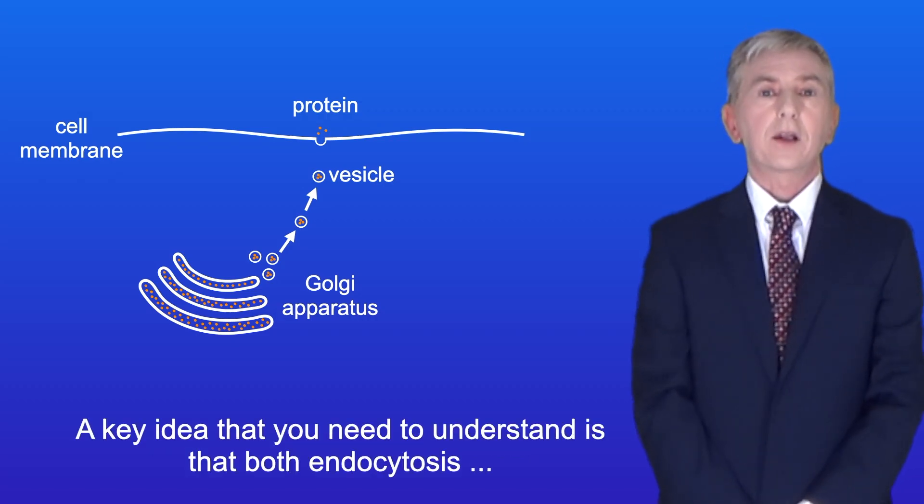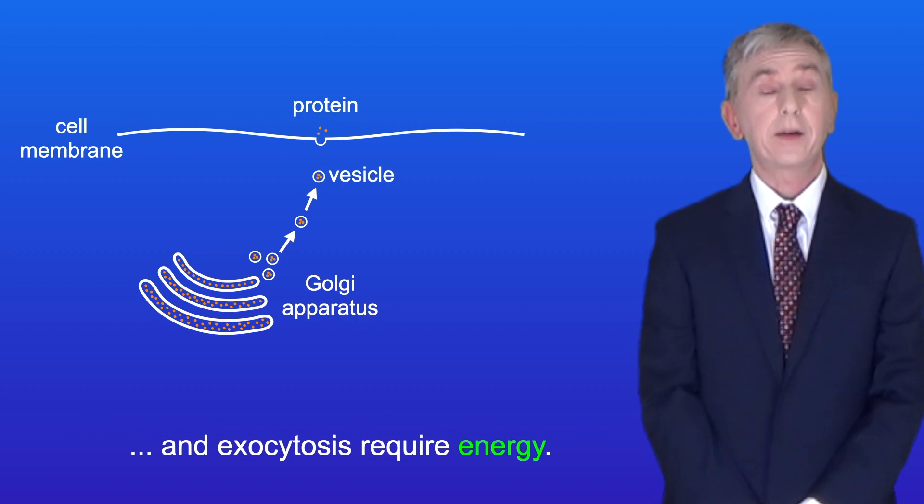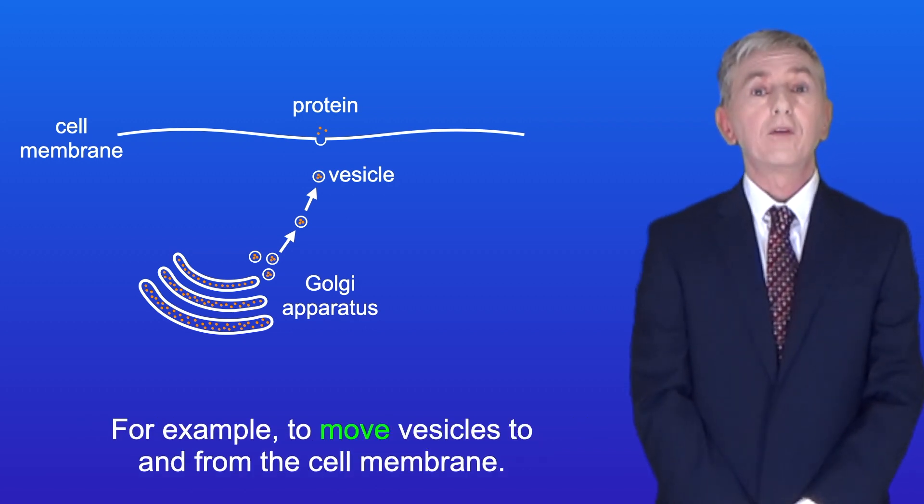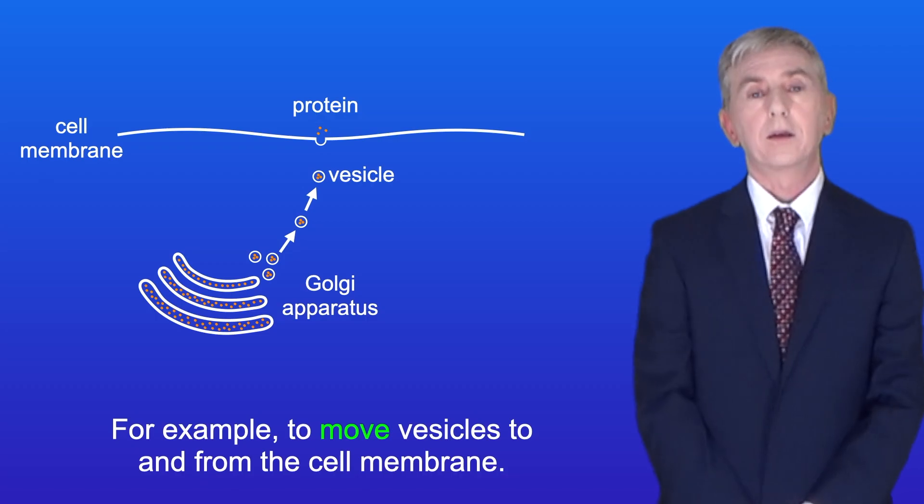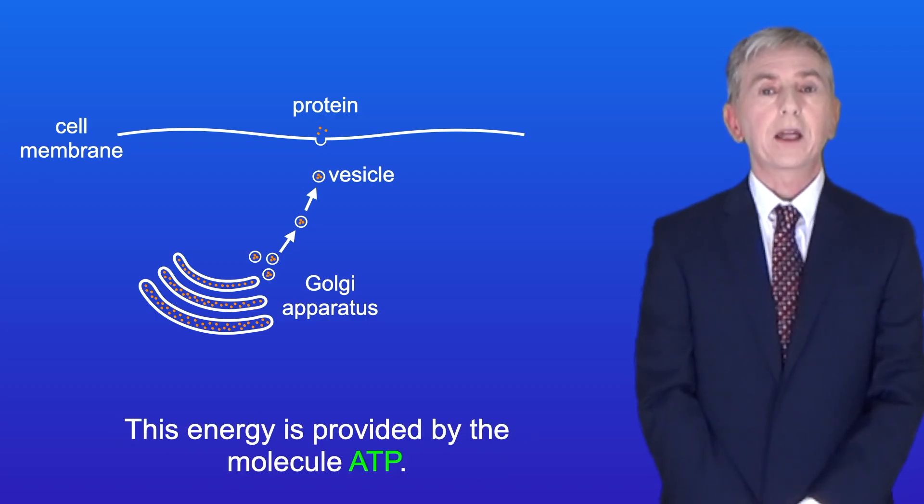Now a key idea you need to understand is that both endocytosis and exocytosis require energy, for example to move vesicles to and from the cell membrane. And this energy is provided by the molecule ATP.